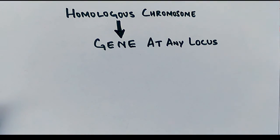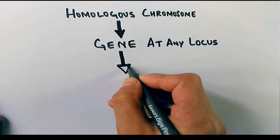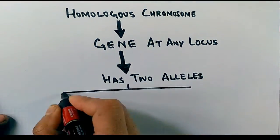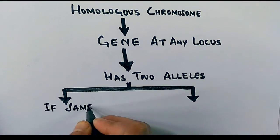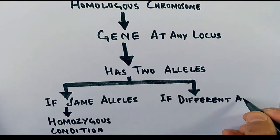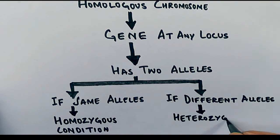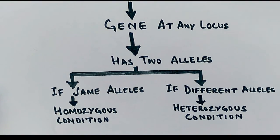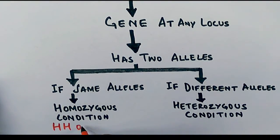So now we have a gene at any locus. It has two alleles. If these alleles are same, we call it a homozygous condition. And if the alleles are different, we call it heterozygous condition. So the homozygous condition is shown as uppercase HH for dominant alleles, or lowercase hh for recessive alleles. And for heterozygous condition we have one dominant allele, one recessive allele, that's one uppercase H, one lowercase h.